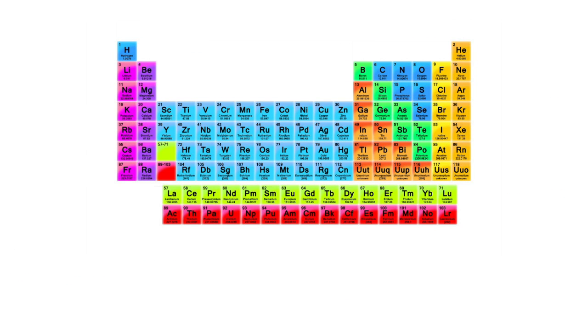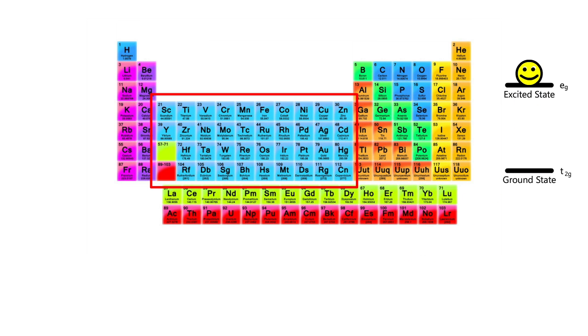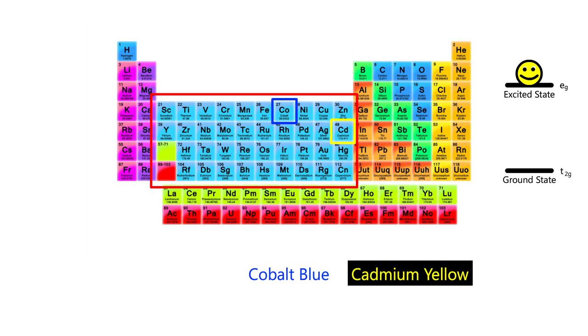Transition metals, those found in the middle of the periodic table, tend to be brightly colored because the transition between their electrons ground states and excited states tend to absorb visible colored light. Once again, you artists out there are already familiar with this. Colors such as cadmium yellow, cobalt blue, and chromium oxide green are all named for the metal compounds found in them.